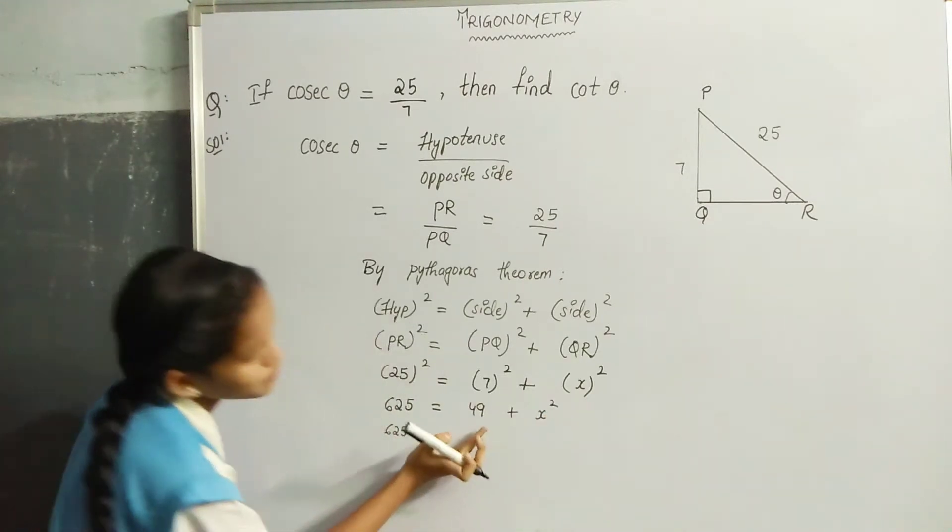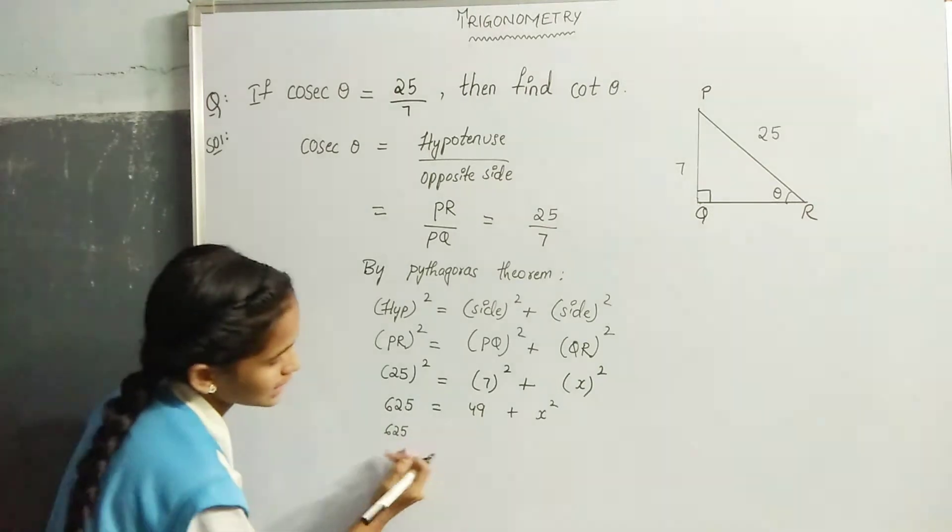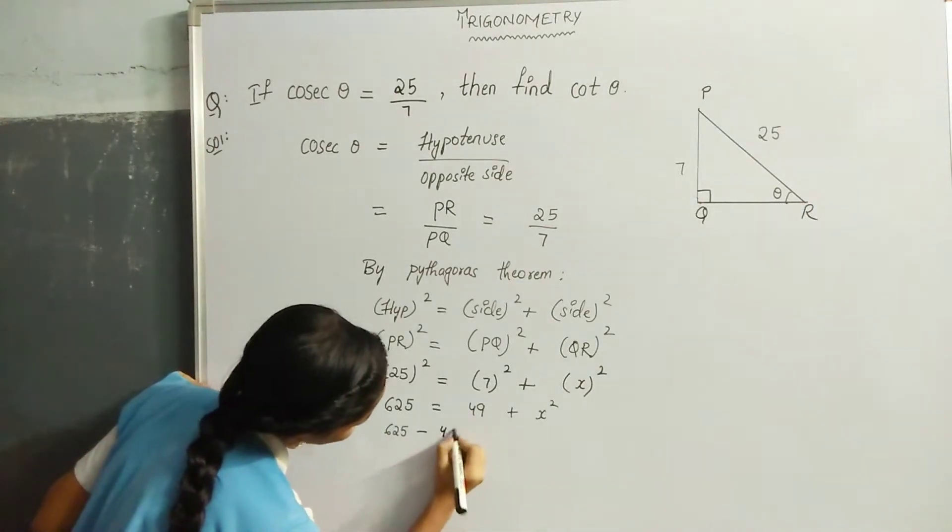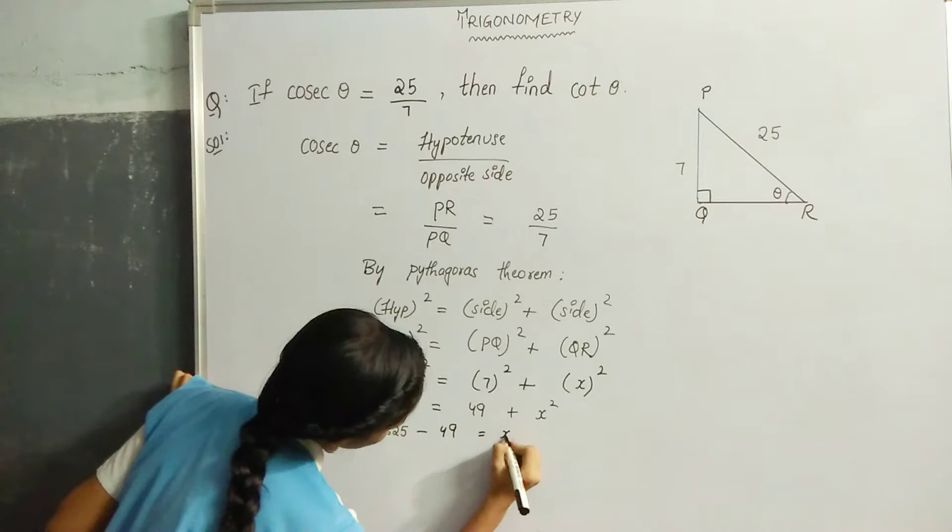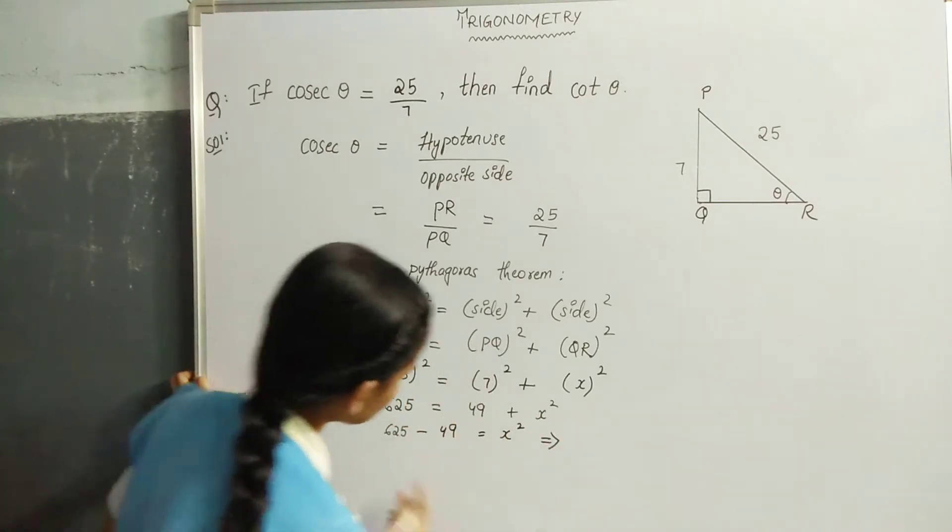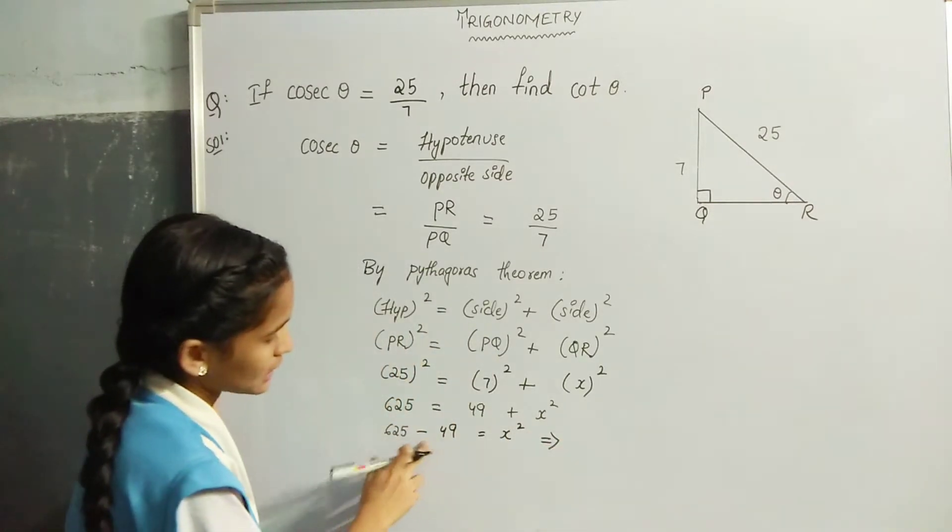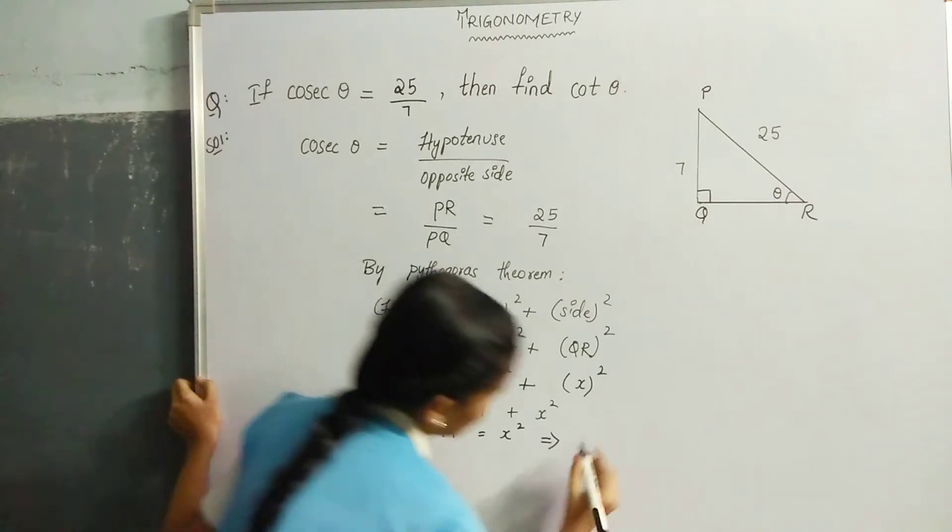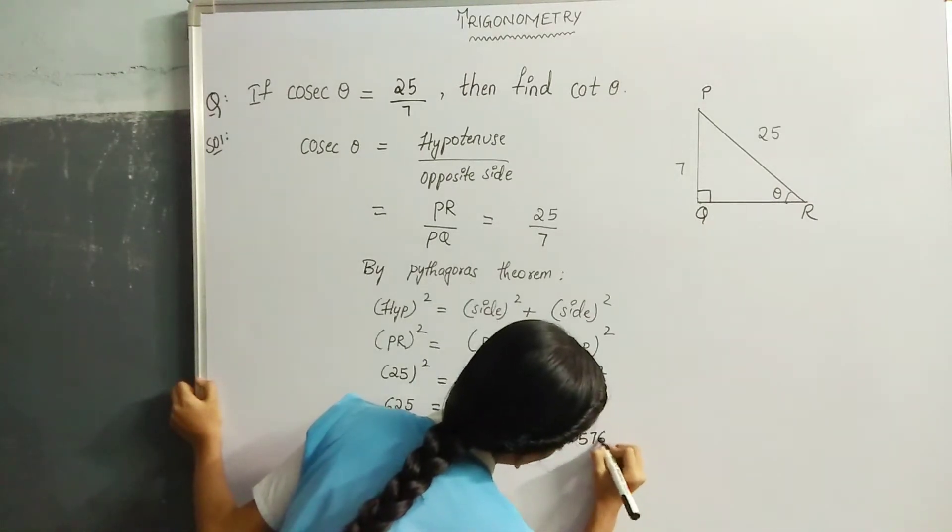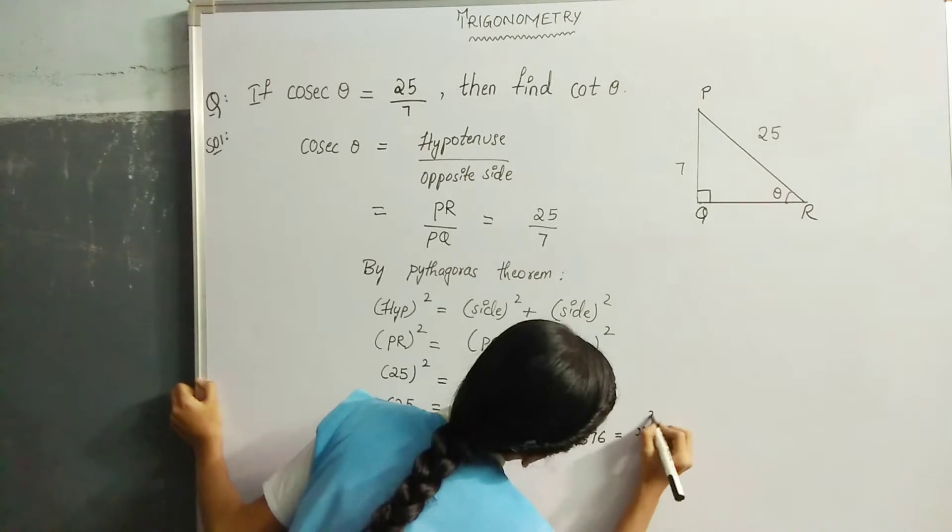625 transposing 49 to the left hand side it becomes minus 49 is equal to X square. That implies 625 minus 49 is 576 is equal to X square.